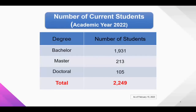This slide shows the number of current students. We have almost 2,000 bachelor degree students and 200 master degree students, and over 100 doctoral students. In total, the total number of students is 2,249. This is as of February of this year.